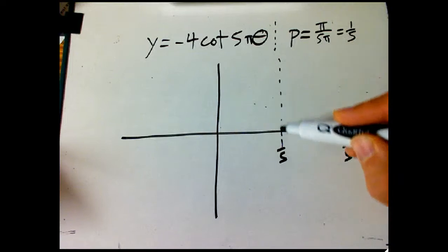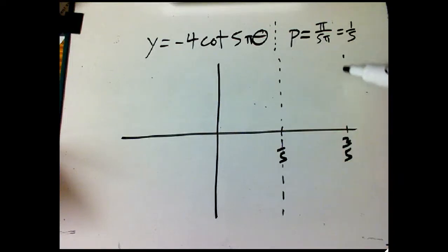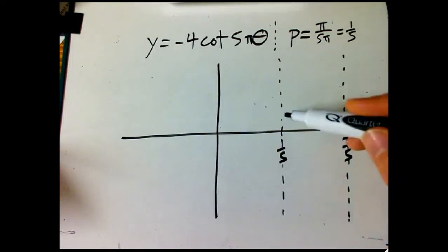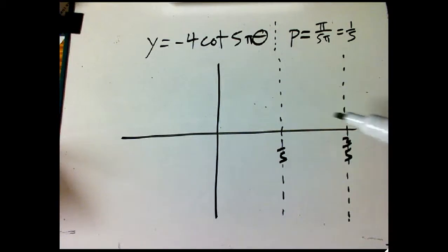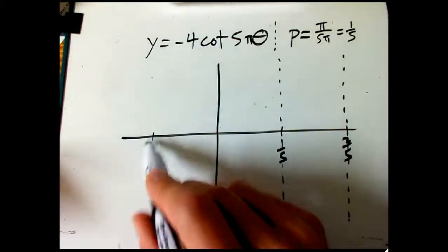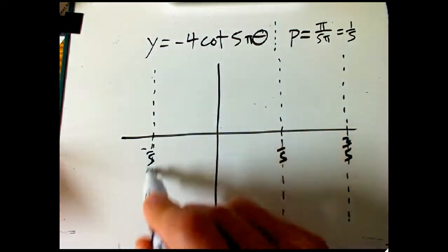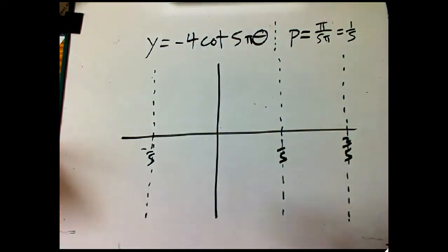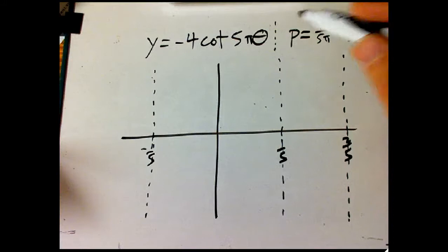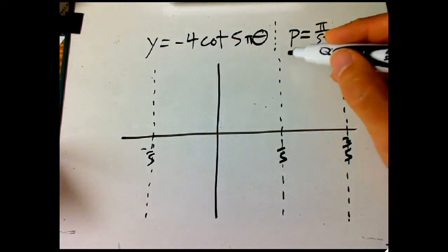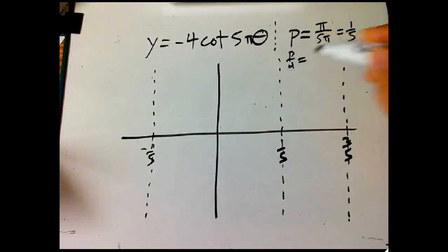Start by drawing the asymptotes — you should do that first. They're easy to draw and they're guidelines. Why draw curves before straight lines when you can do it the other way around? We have room for three periods. The quarter period, which is always important, is one-twentieth.